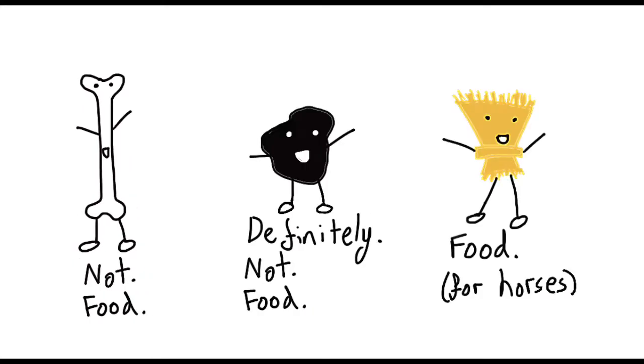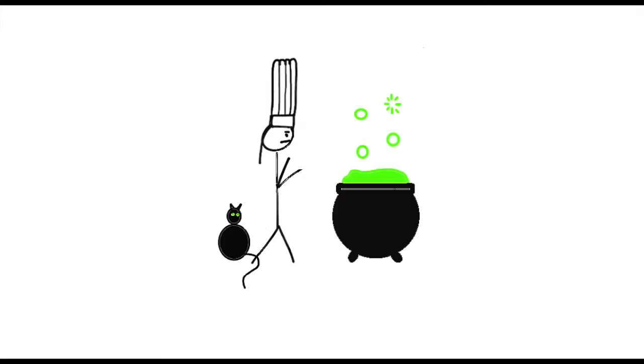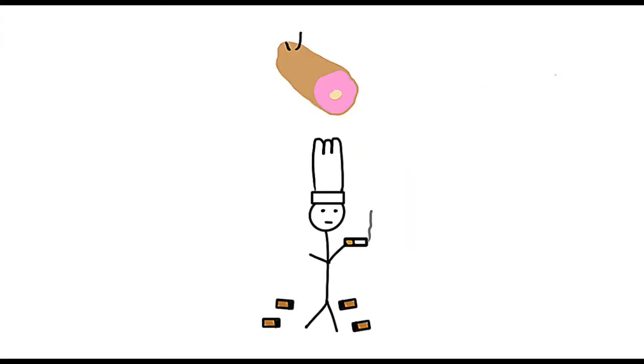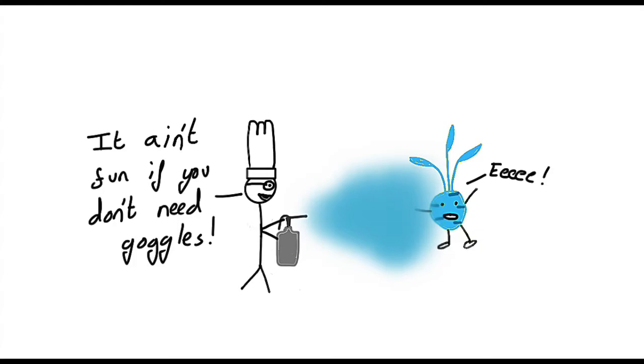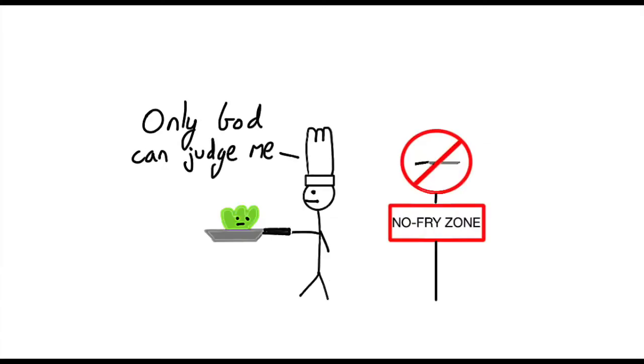As well as using mysterious ingredients they also undertake strange cooking practices such as smoking everything, using liquid nitrogen instead of the freezer and frying things which should not be fried such as lettuce.